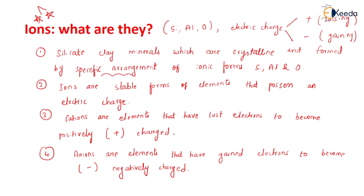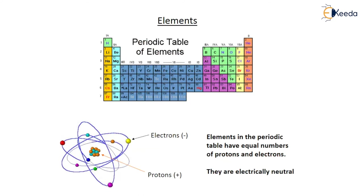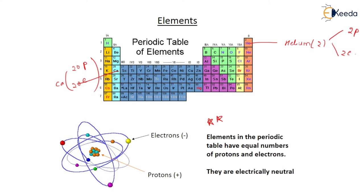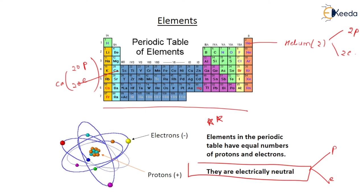These are the elements - we know this is a periodic table of elements seen in chemistry. These are the electrons which will revolve in specific shells. The protons, the positively charged particles, are present at the center in the nucleus. These elements in the periodic table have equal number of protons and electrons. For example helium has atomic number 2, meaning 2 protons and 2 electrons. If you take calcium, it will have 20 protons and 20 electrons - they are electrically neutral.